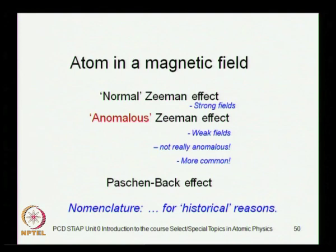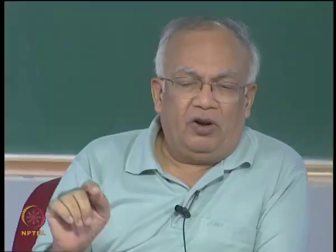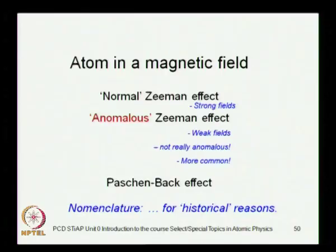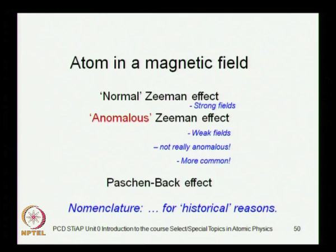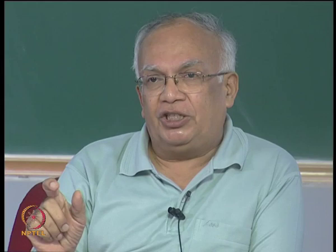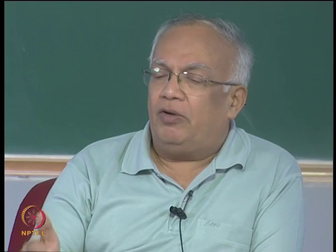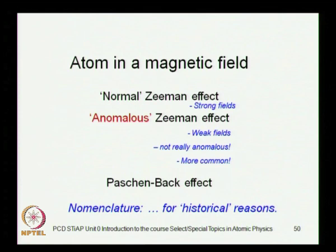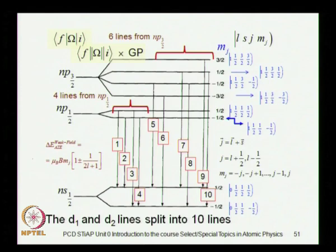These terms — normal Zeeman, anomalous Zeeman, Paschen-Back — are named differently for historical reasons, corresponding to different magnitudes of the magnetic field. The implicit reference is the spin-orbit interaction internal to the atomic structure: whether the externally applied field is weak, about the same, or stronger than the spin-orbit coupling. We will find that the D1 D2 lines split into a large number of transitions that can be studied spectroscopically.